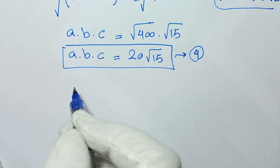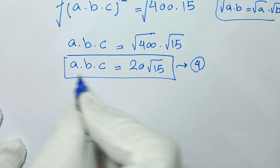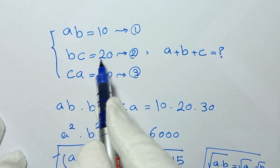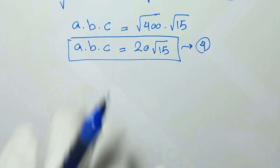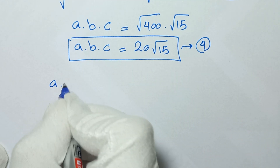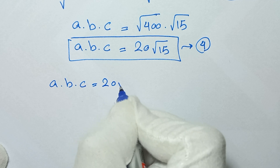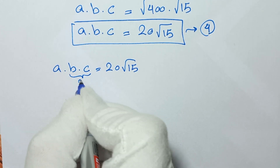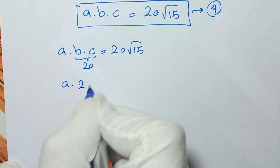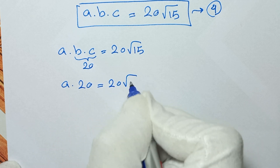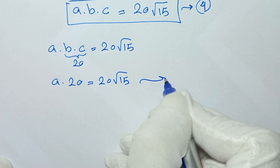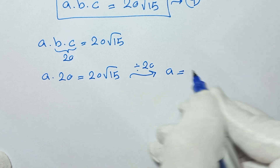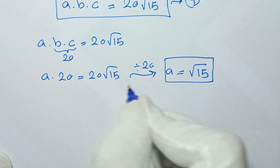From equation number 4, ABC = 20√15. To find the value of A, from equation number 2, BC equals 20. So we write A times 20 equals 20√15. Dividing both sides by 20, A equals √15.